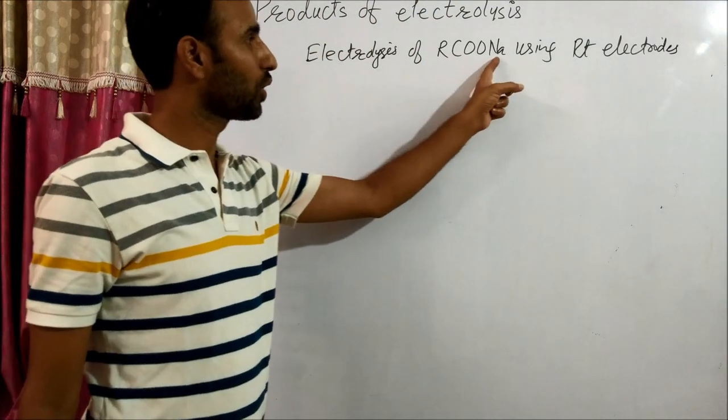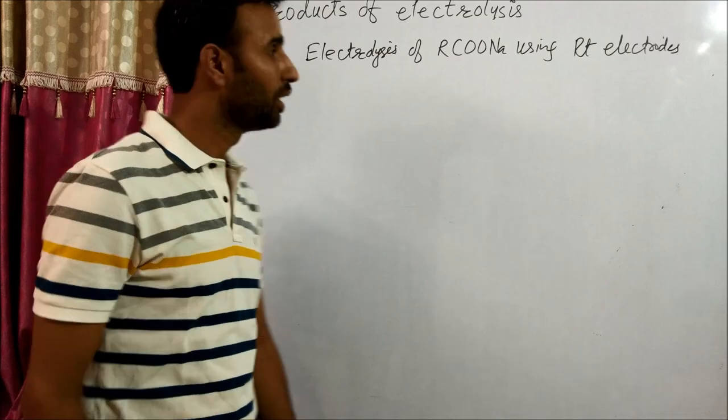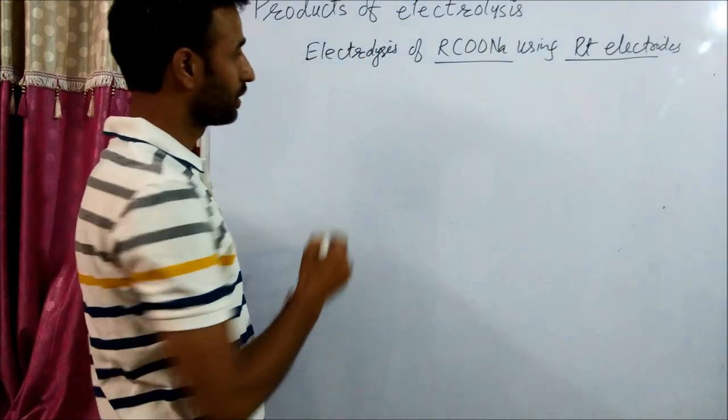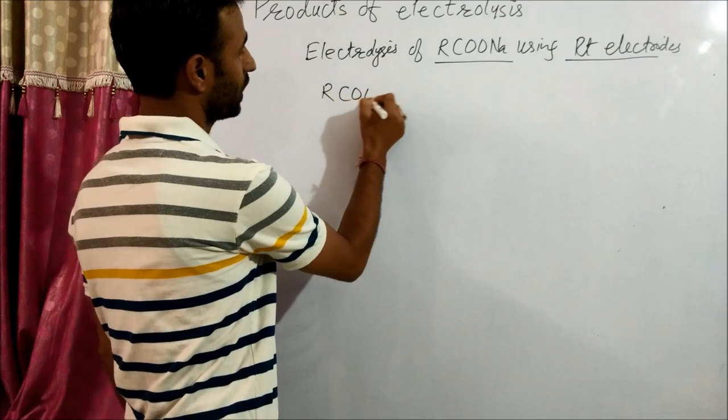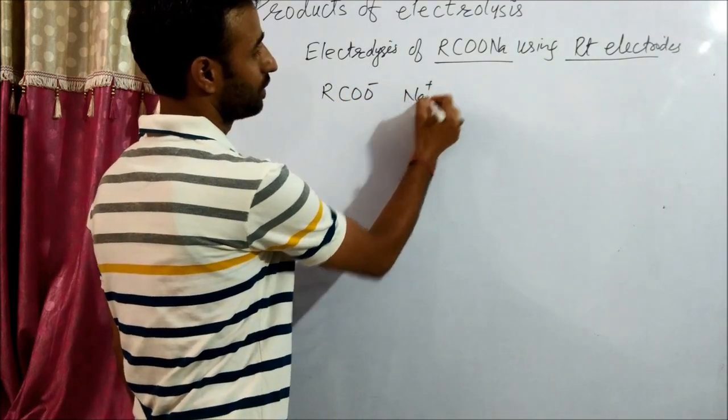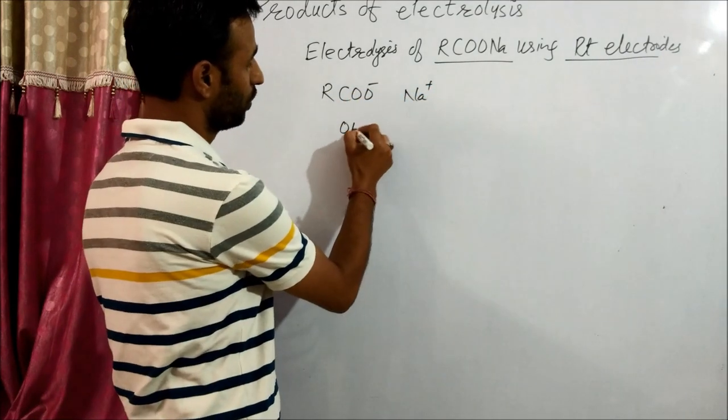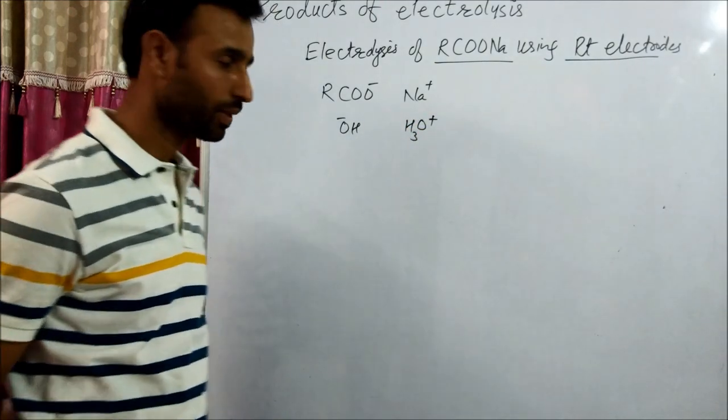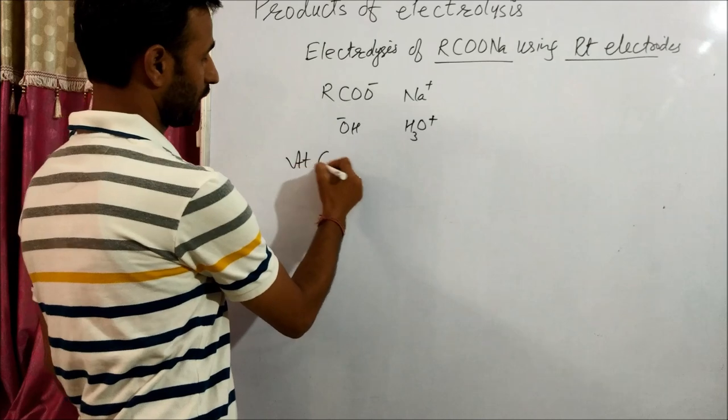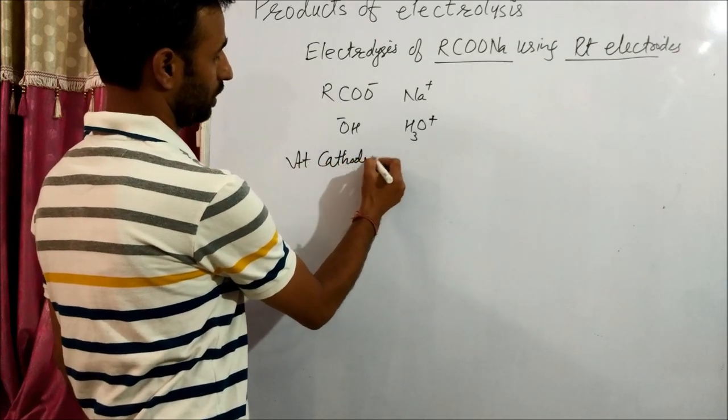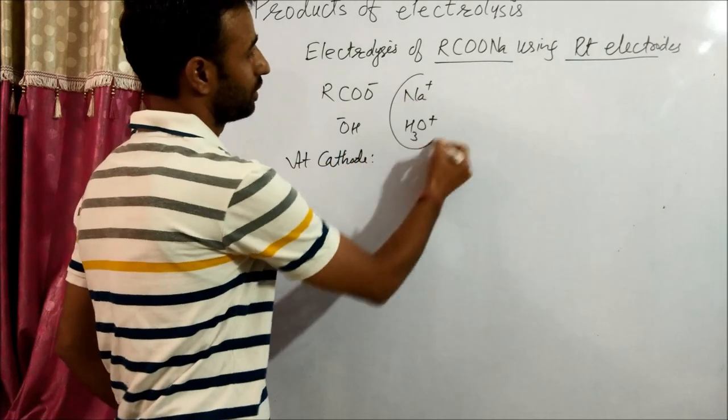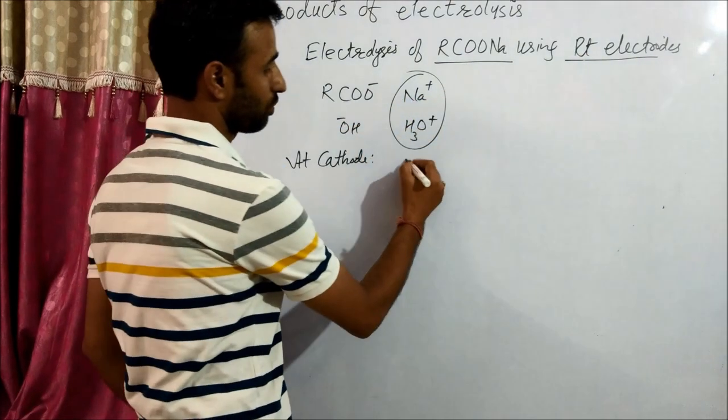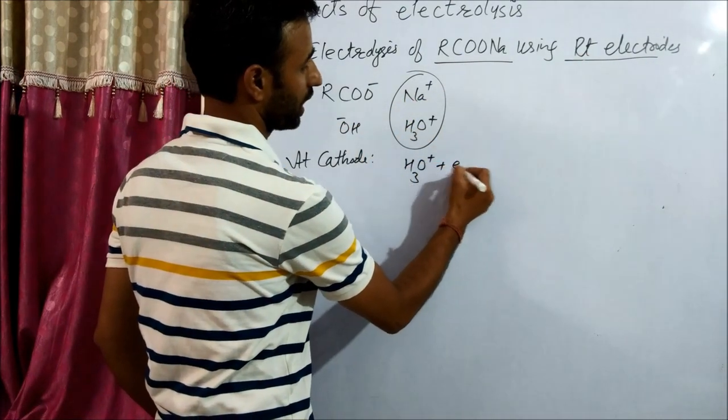Electrolysis of RCOO-Na using platinum electrode. You know this is Kolbe's electrolysis. In this case we have RCOO- and Na+. And from water we have OH- and H3O+. So at cathode, reaction is simple. Electrode is of platinum so obviously H3O+ gains electron.